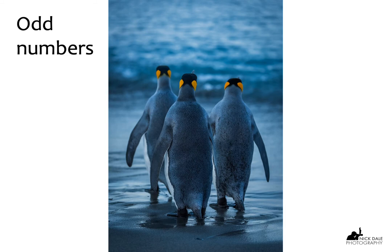Another strange thing about the human eye is that we tend to like odd numbers of subjects. Obviously many photographs are taken of one subject — that's an odd number if you want to be pernickety. But generally, if we're taking shots of a group of animals or subjects, it's better to have an odd number. These three king penguins work because there are three of them, not two, not four. Equally, if you're taking a still-life shot of some oranges or apples, make sure it's an odd number. I can't explain it — it's just one of those quirks of the human eye.